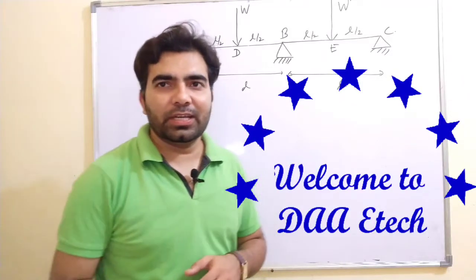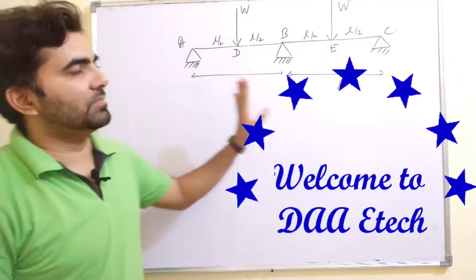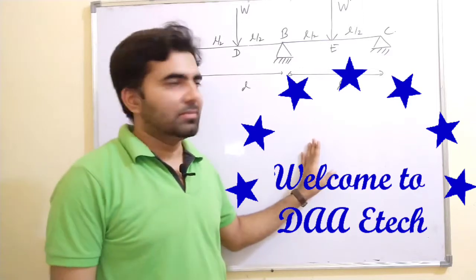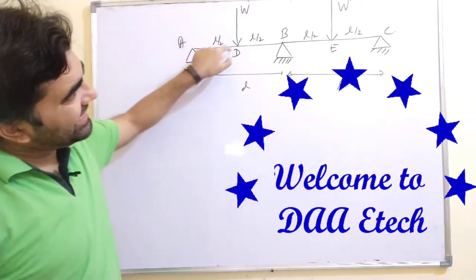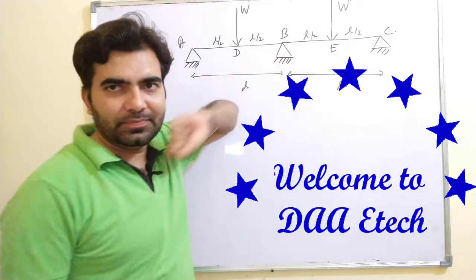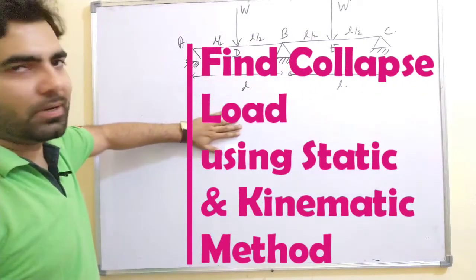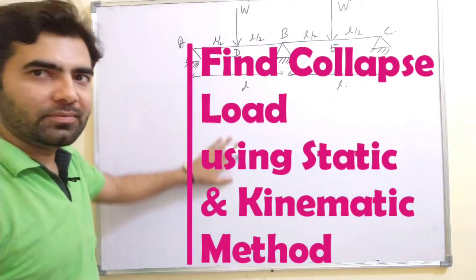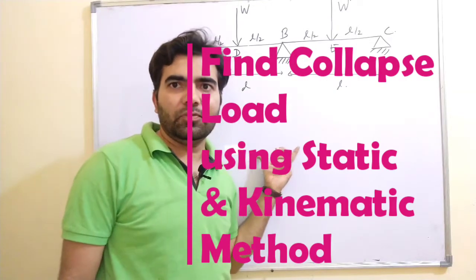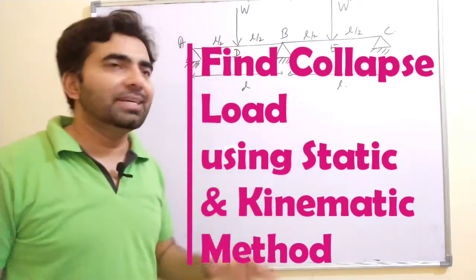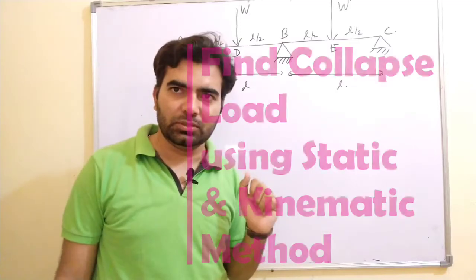Hello friends, today we will discuss a special problem of a continuous beam subjected to a point load at D and a point load at E. In this problem, we will find the collapse load by using both the static method and the kinematic method.